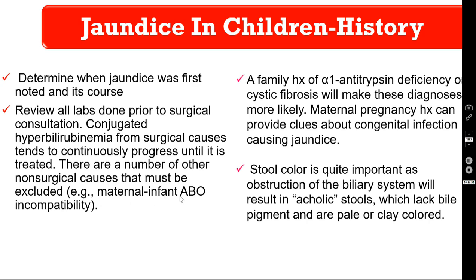There are a number of non-surgical causes that must be excluded — for example, maternal and infant ABO incompatibility. Family history of alpha-1 antitrypsin deficiency or cystic fibrosis should also be excluded. Maternal pregnancy history can provide clues about congenital infection such as TORCH infections that can cause jaundice. Stool color is quite important, as obstruction of the biliary system results in acholic stools — pale or clay-colored stools lacking bile pigments.